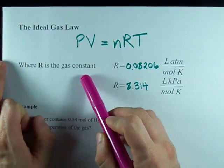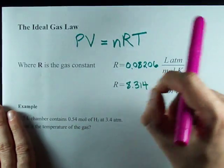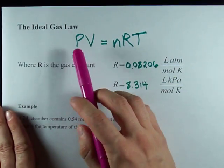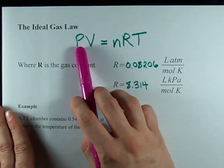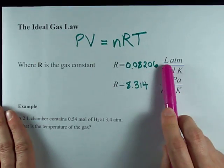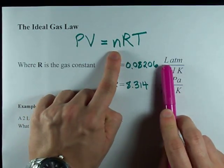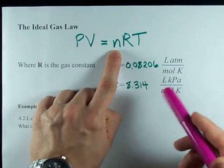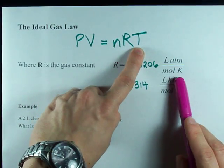Now R is called the gas constant and it's going to have different units depending on what the units of pressure are that you use. I always want you to put volume in liters, number of moles in moles, and temperature in Kelvin.